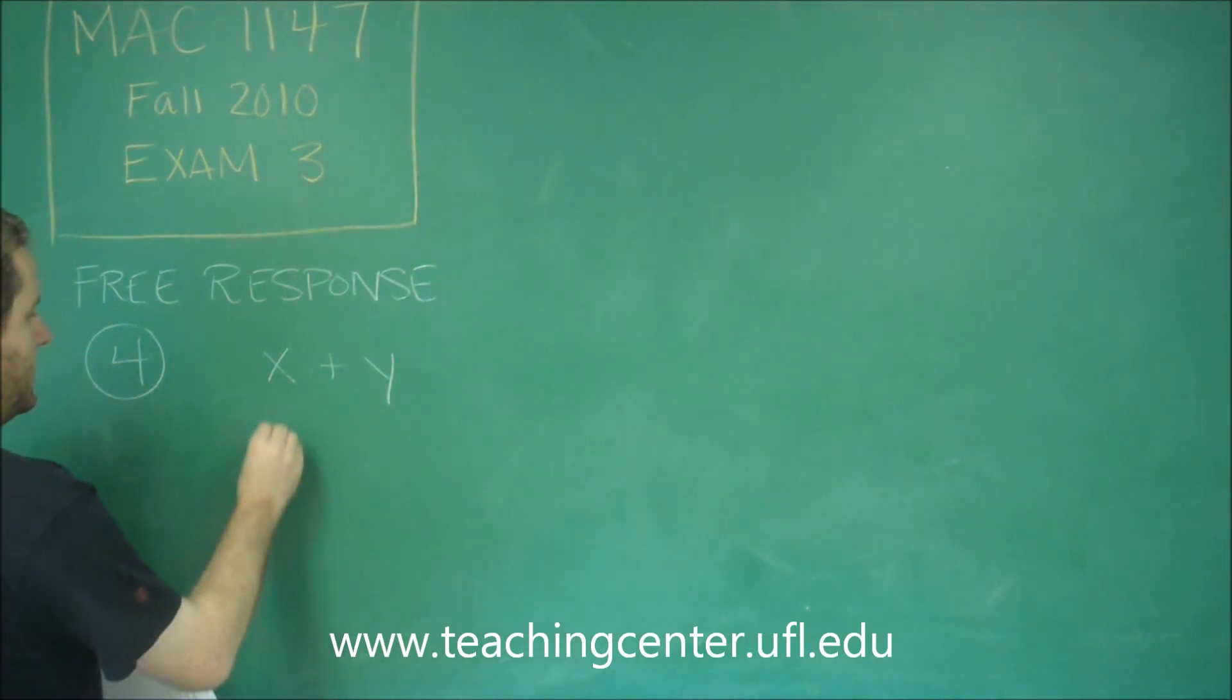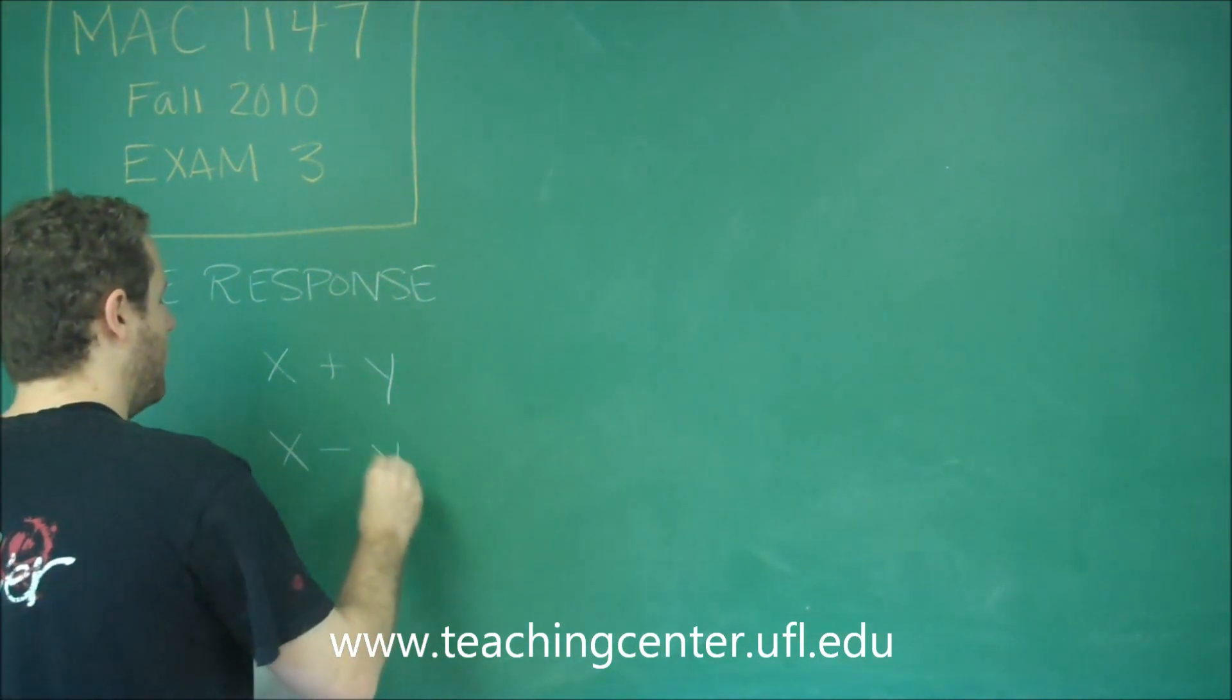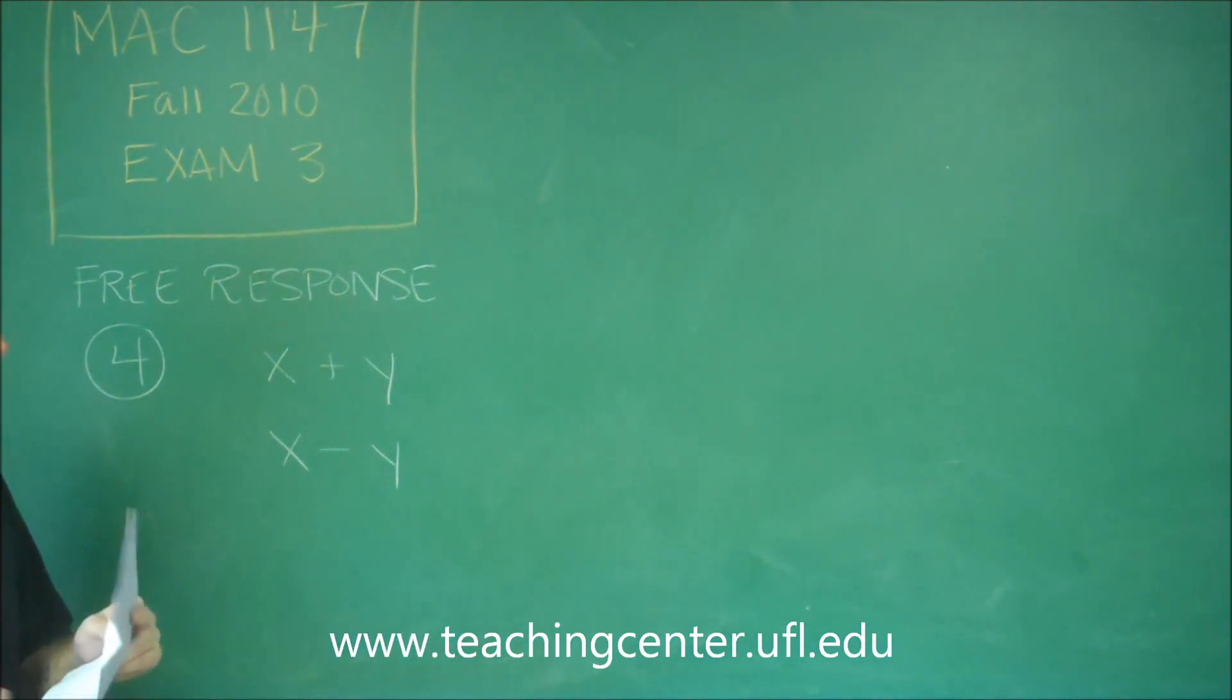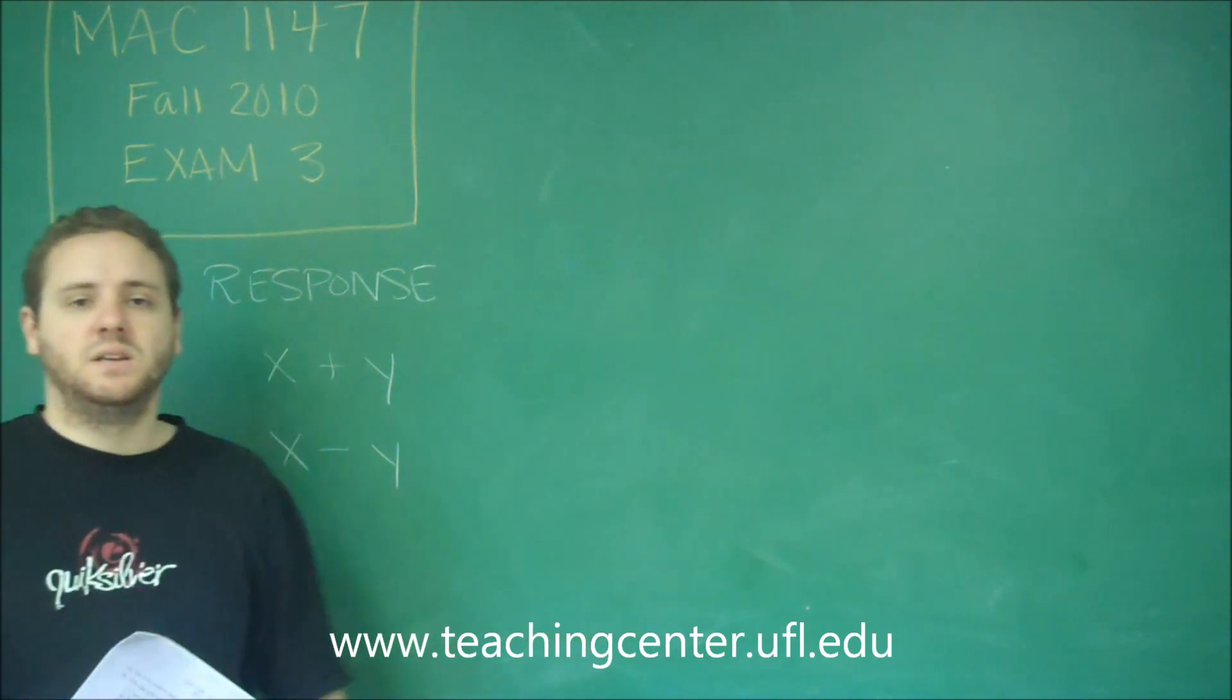Going against the current, you'd have the speed of the boat minus the speed of the current, because the current's making the boat slow down. So now we just need to figure out what are these equal to.